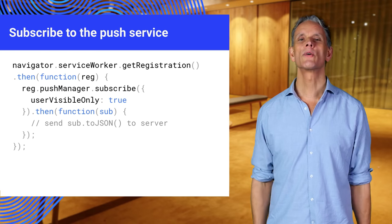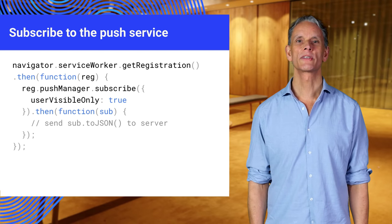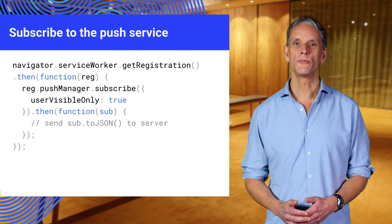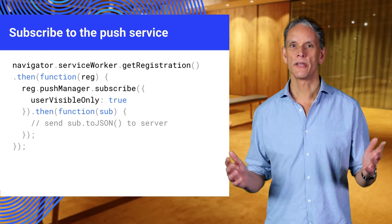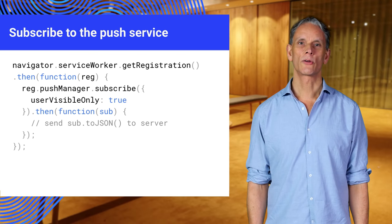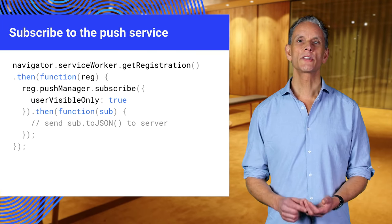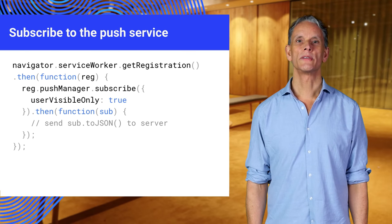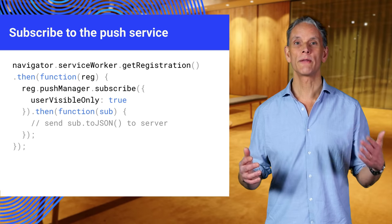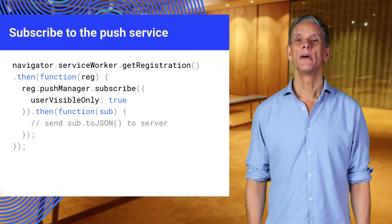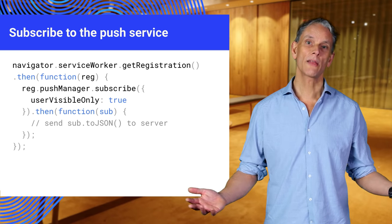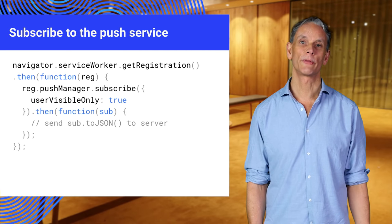Before sending notifications, we must subscribe to a push service. We call pushManager.subscribe on the service worker registration object to subscribe. The resulting push subscription object includes all the information the application needs to send a push message: an endpoint and the encryption key needed for sending data. Each subscription is unique to a service worker. The endpoint for the subscription is a unique capability URL — knowledge of the endpoint is all that is necessary to send a message to your application. The endpoint URL therefore needs to be kept secret, or other applications might be able to send push messages to your application.